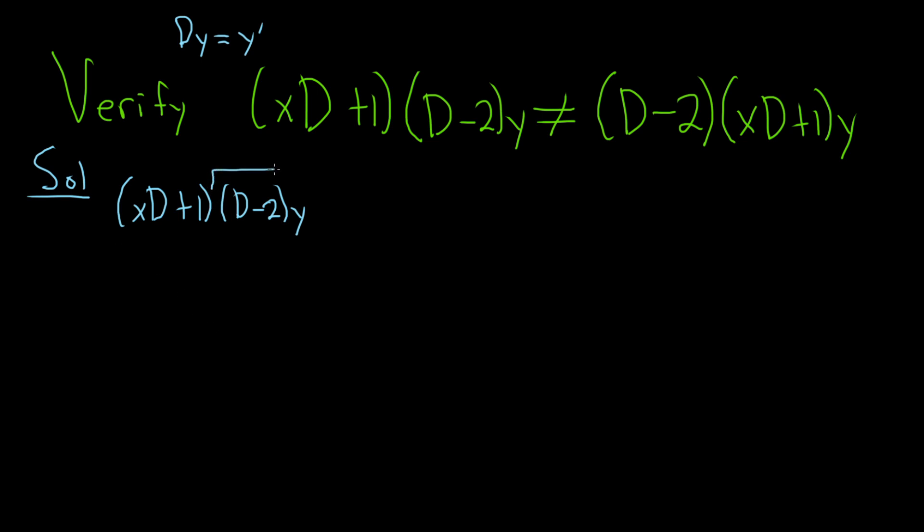So let's apply this to y prime. So we'll keep this one here, xD plus 1. And how it works is you basically just multiply, except you keep in mind that when you take big D and you multiply it by y, you're really taking the derivative. So it's y prime. And then minus 2y. You just multiply the numbers. No big deal there.